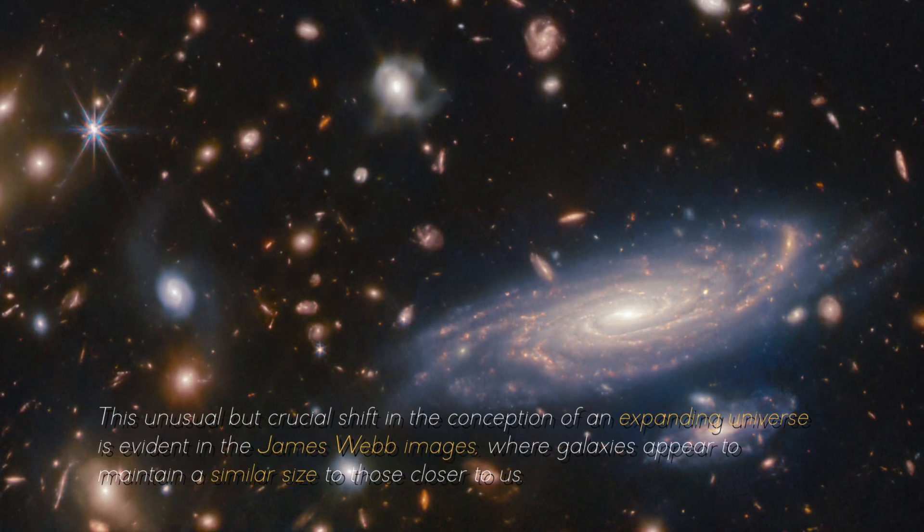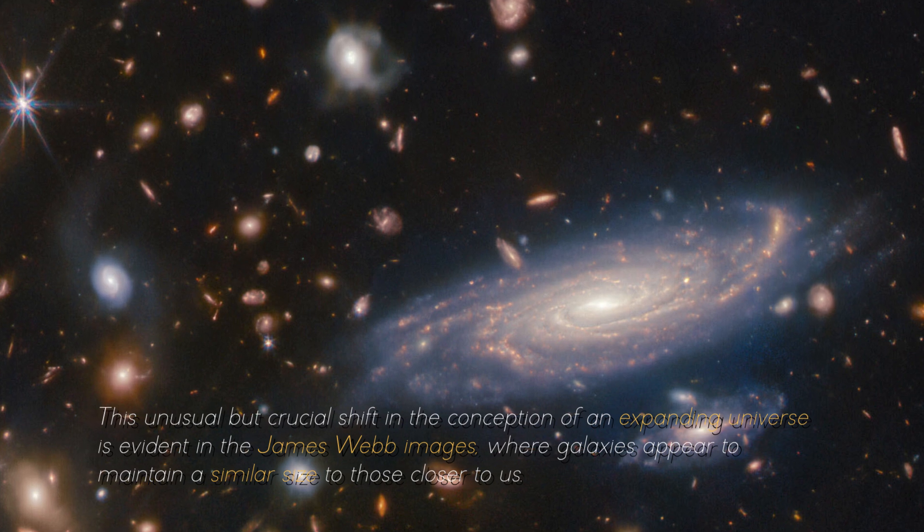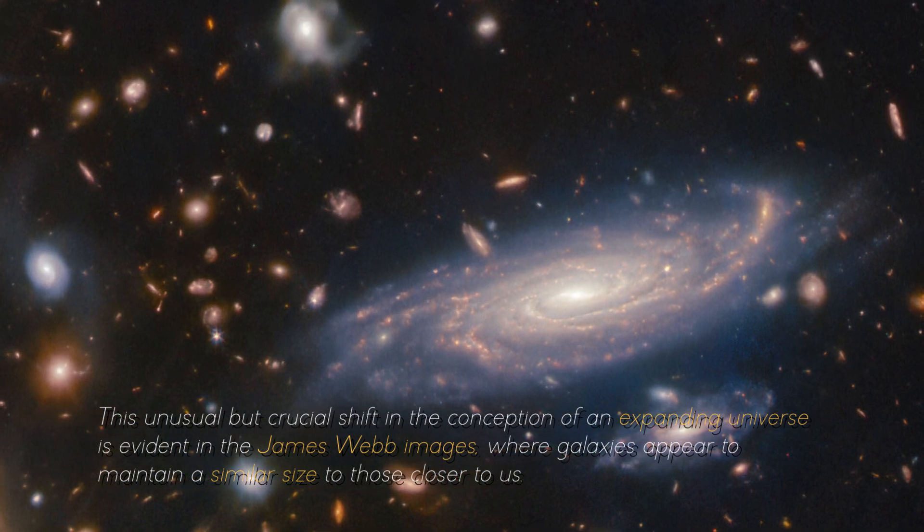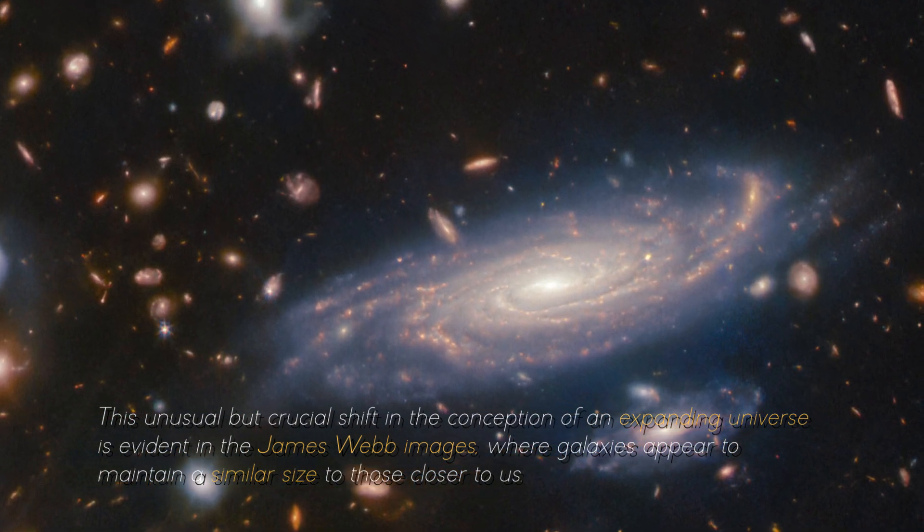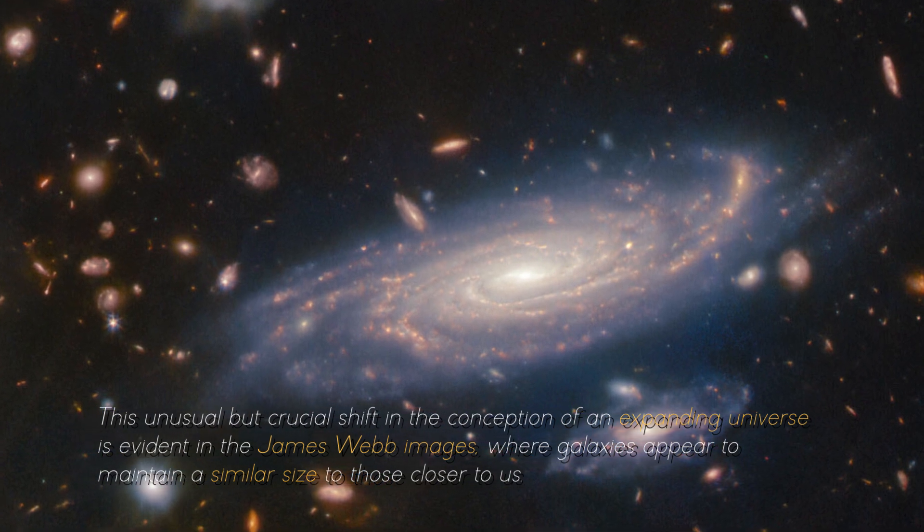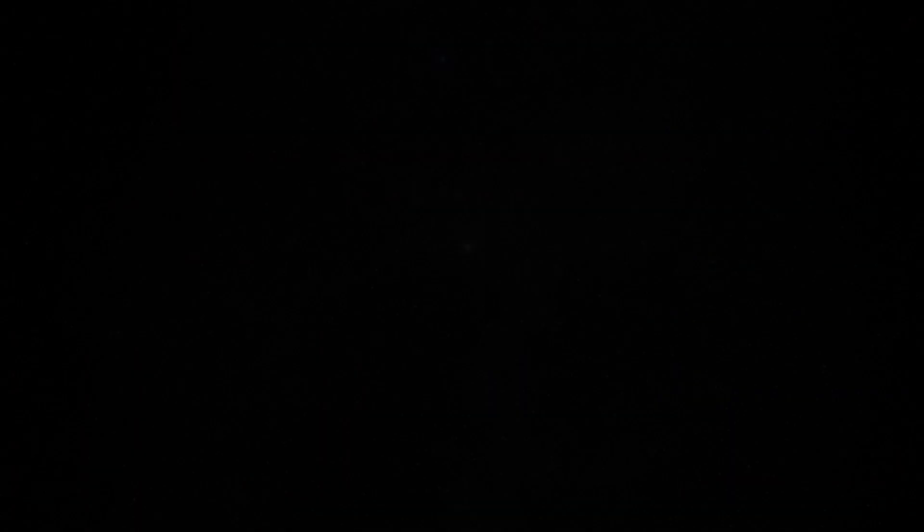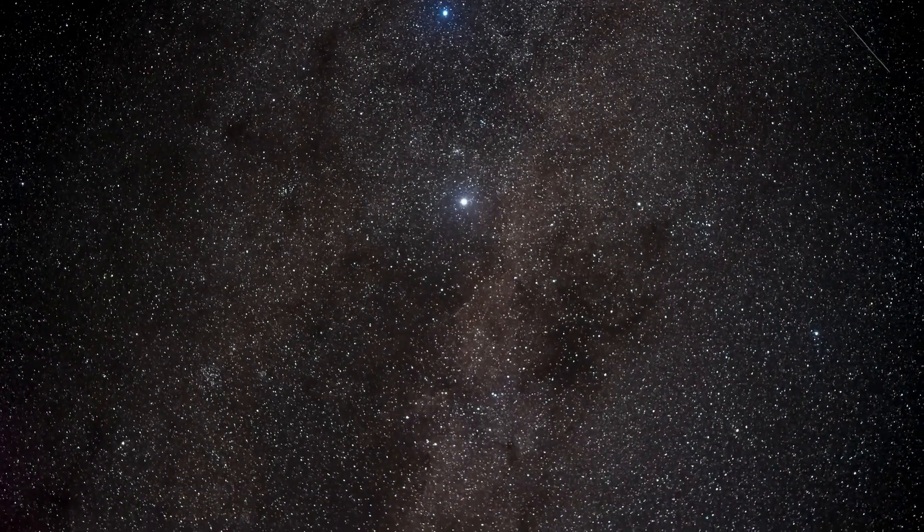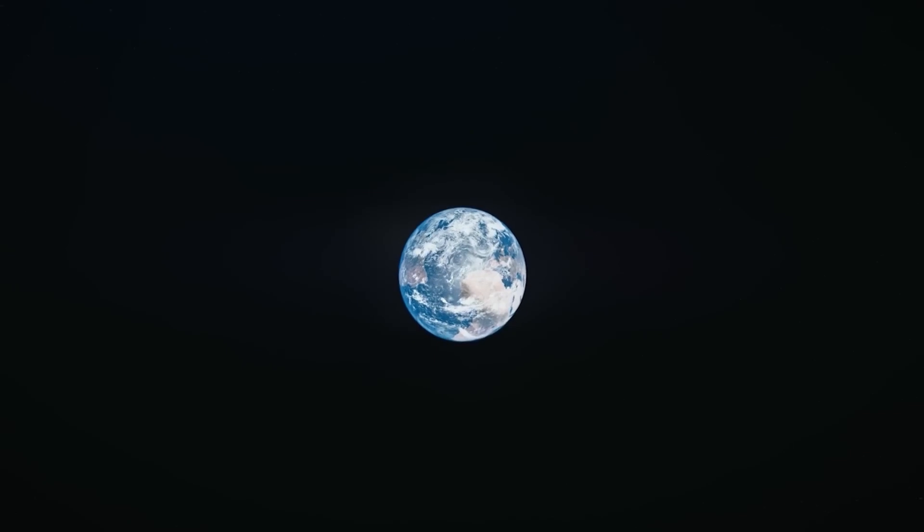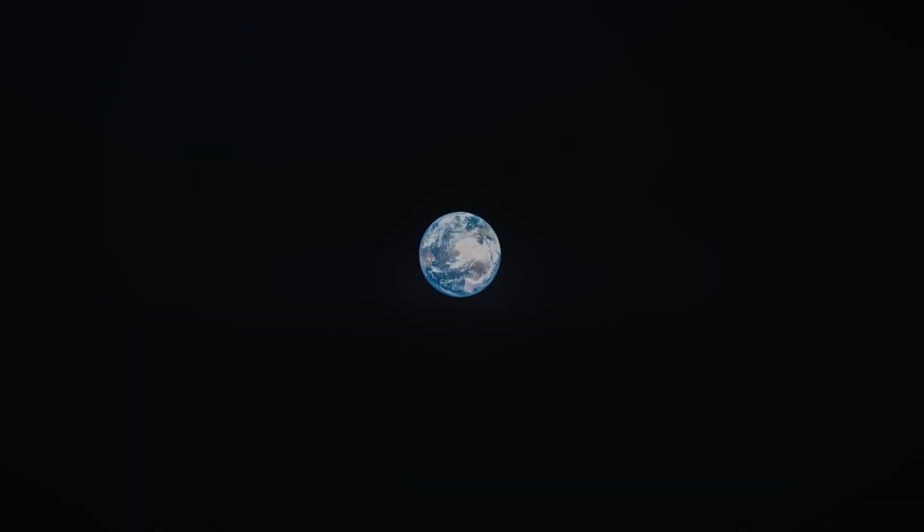This unusual but crucial shift in the conceptions of an expanding universe is evident in the James Webb images, where galaxies appear to maintain a similar size to those closer to us. In reality, the conventional theory may be making several mistakes, surprising as it may seem.